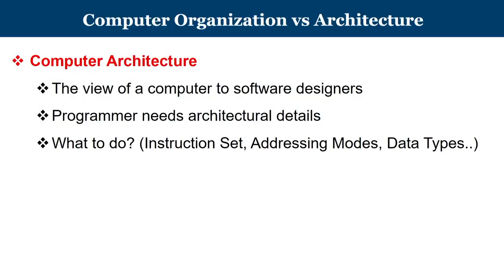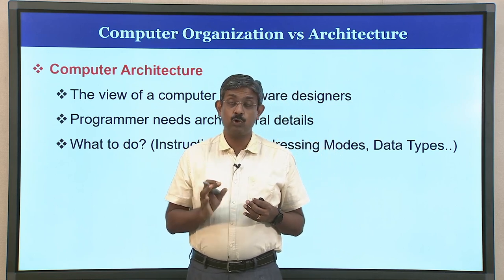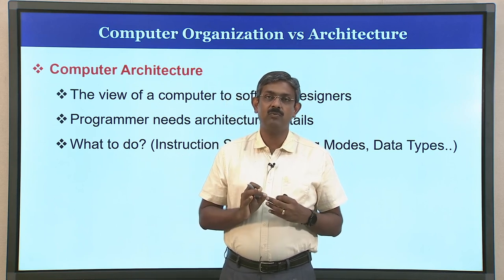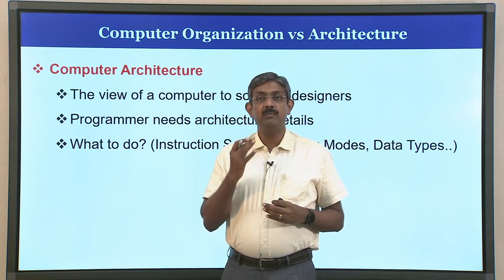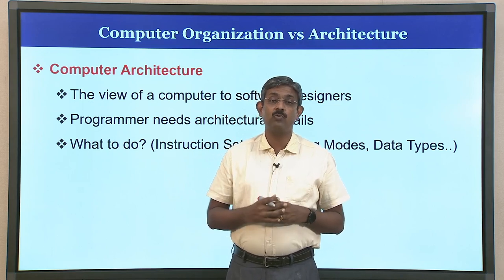We will begin our discussion with a quick understanding of the difference between computer architecture and computer organization. When we talk about computer architecture, this is the view of a computer to the software designers. We have hardware, on top of that we have the operating system, and then various application programs running on top. Architecture also talks about what to do.